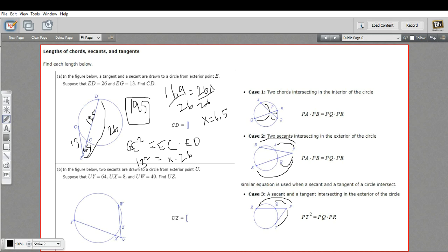All right, let's try another one. This one looks like we have the two secant lines that have a point of intersection on the exterior of the circle. And let's fill in our information. UY is 64, and UX is 8, and UZ we want to find, and UW, that whole length is 40.